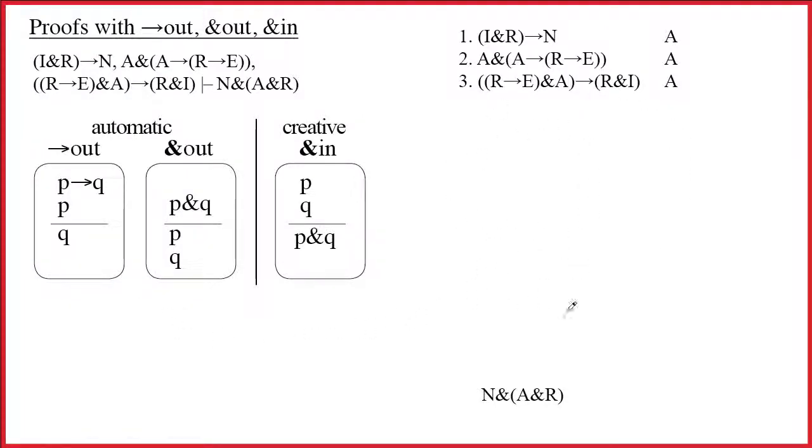Alright, here's another proof using our first three rules: arrow out, ampersand out, and ampersand in. Here's our argument. It has three premises, one, two, three, and then turnstile, the conclusion.